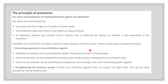We are going to study about the ways to prevent diseases. But before that, we need to know the limitations of treating infectious agents via medicines. First, our body functions might not be able to recover easily — once you get ill, your body will not recover easily, and treatment takes time, hence it can affect our daily activities. Also, an infectious disease may be transferred from a person who is suffering to another, as the disease could be a contagious one. That is why we need to find ways to prevent diseases in the first place.